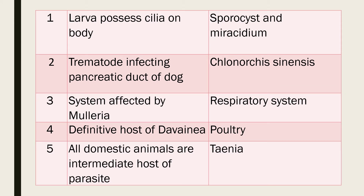Question 1: Larva that possesses cilia on the body. Answer: Sporocyst and Miracidium. Question 2: Trematode infecting the pancreatic duct of dog. Answer: Clonorchis sinensis.